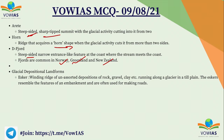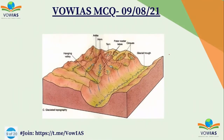The Esker is a glacial depositional landform — a winding ridge of unsorted deposits of rock, gravel, clay, etc., resembling the features of an embankment. In the diagram you can see all the different types of glacial landforms: the hanging valley, Arête, Horn, tarn, Cirque, glacial trough — all are part of the glacial landforms.